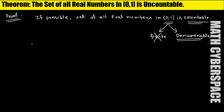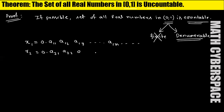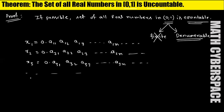If it is denumerable, the elements can be listed as: x1 = 0.a11 a12 a13 ... a1n ..., x2 = 0.a21 a22 a23 ... a2n ..., x3 = 0.a31 a32 a33 ... a3n ..., and in general xn = 0.an1 an2 an3 ... ann ...